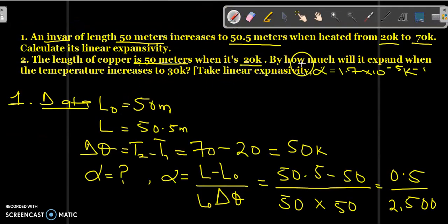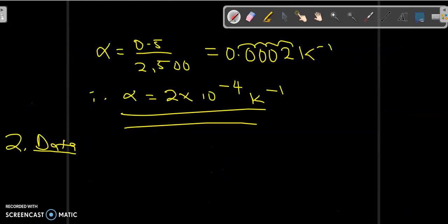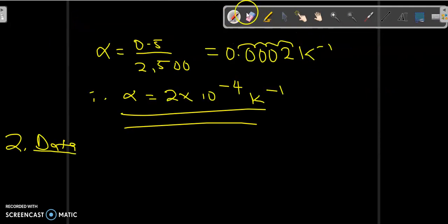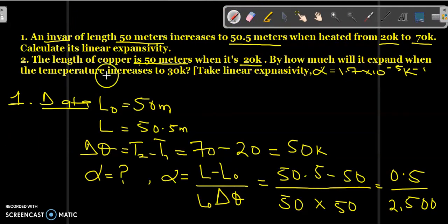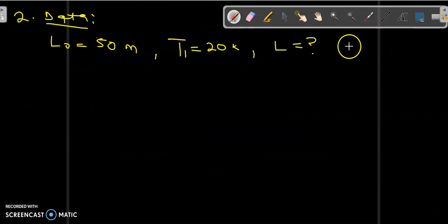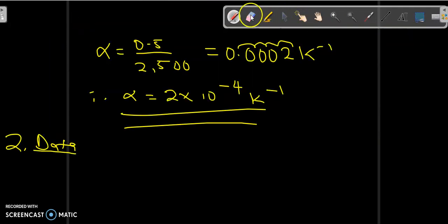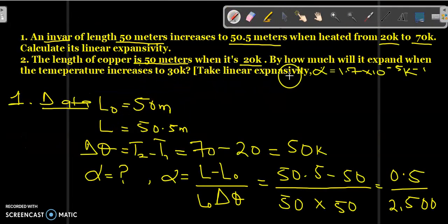By how much will it expand? That is, what is the increase in length? Let's go back again — when the temperature increases to 30 Kelvin, that means T2 is equal to 30 Kelvin. Linear expansivity alpha equals 1.7 times 10 to the power of minus 5 per Kelvin.